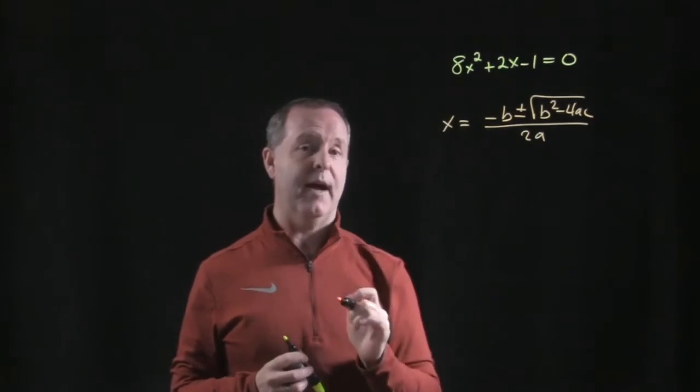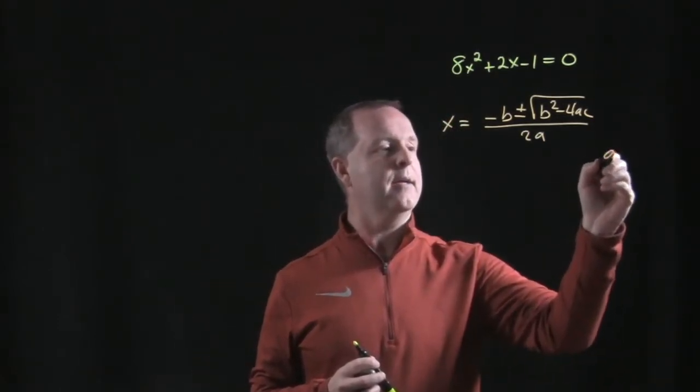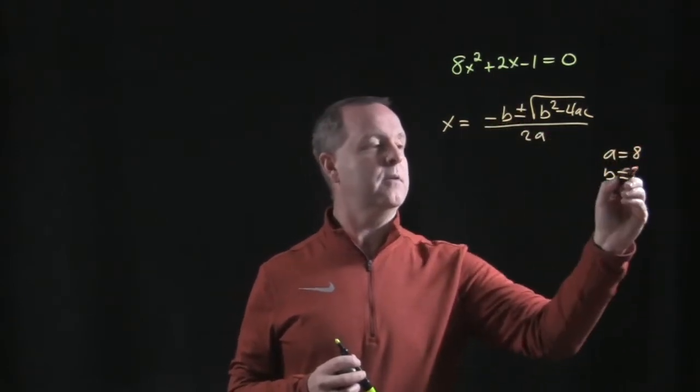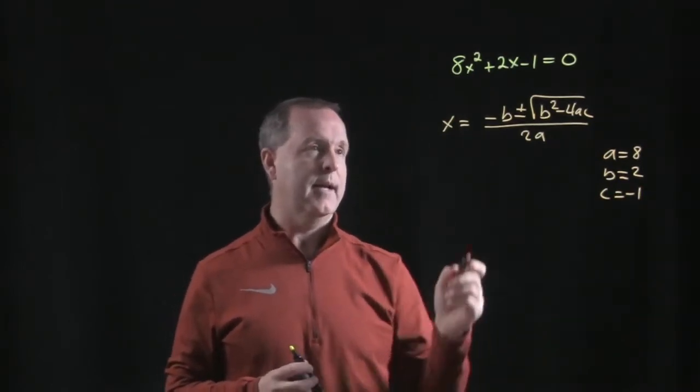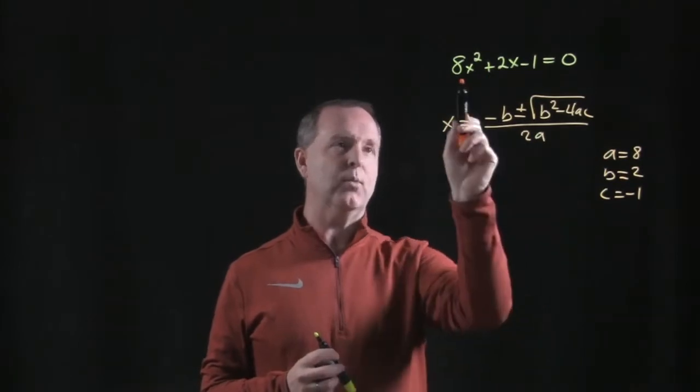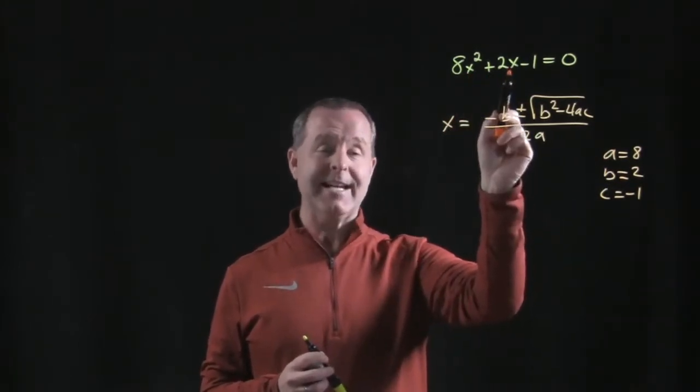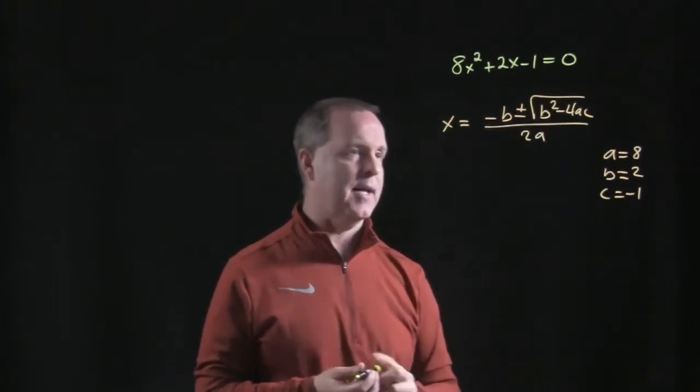We just simply plug these values in. So in this one, I need to recognize that my a is an 8, my b is a 2, and my c is a negative 1. And I need to be careful. It's not always a, b, c. My a is related to my x squared term, my b is related to my x term, and my c is my constant at the end. So that's my clues.